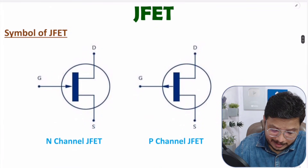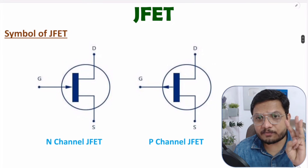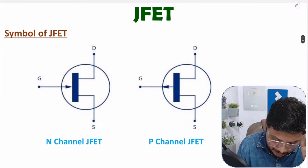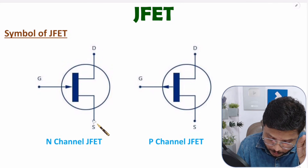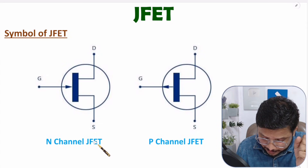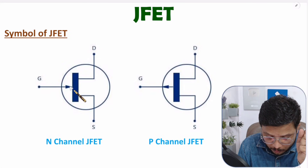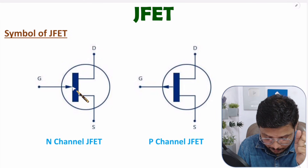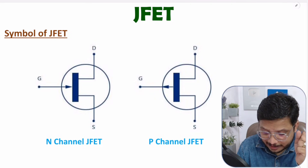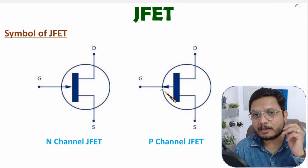JFET is a three-terminal device having a gate terminal, drain terminal, and source terminal. There are basically two types: N-channel JFET and P-channel JFET. For N-channel JFET, the gate terminal arrow is in the inward direction. For P-channel JFET, the gate terminal arrow is in the outward direction. The direction of the arrow justifies the symbol of the JFET.